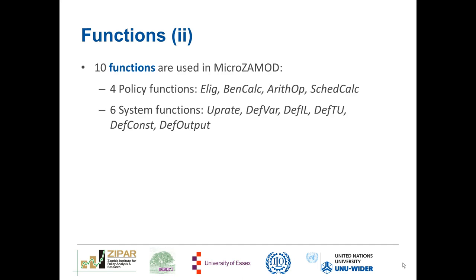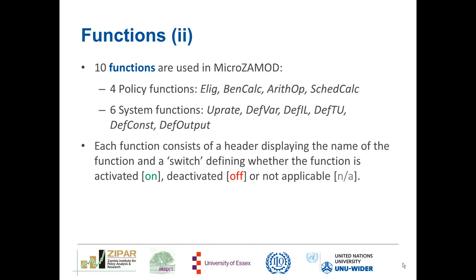We have 10 functions in MicroZamod. We have four policy functions: ELEGE, BenCalc (benefit calculator), ARITHOP, and ShedCalc. We then have six system functions: Uprate, DefVar, DefIL (income list), DefTU (tax unit), DefConst (constant), and DefOutput, which we've seen in our previous session. Each function consists of a header displaying the name of the function and a switch, telling us whether the function is activated (switched on), deactivated (switched off), or not applicable (NA).